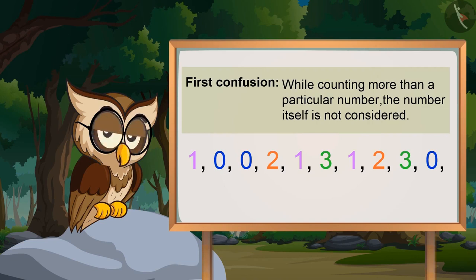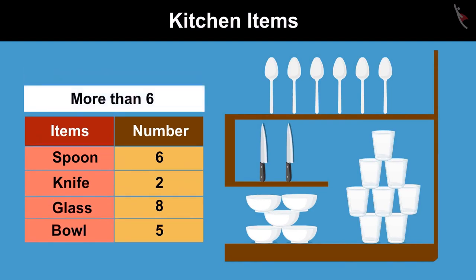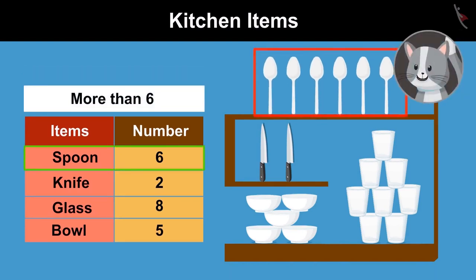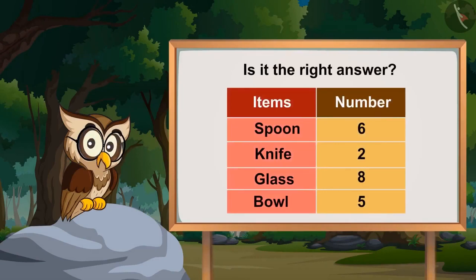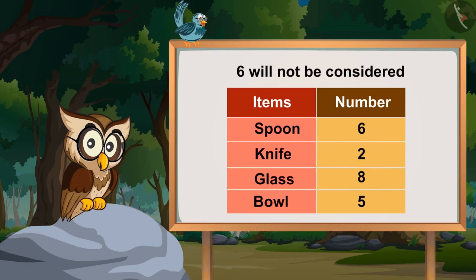Let's look at this example. Some kitchen items and their numbers are shown here in a tabular form. Which items are more than 6 in number? Phone and glass. Is it the right answer? I think just the glass, because you asked more than 6 — therefore we cannot consider 6. Absolutely right! While counting more than a particular number, the number itself is not considered.